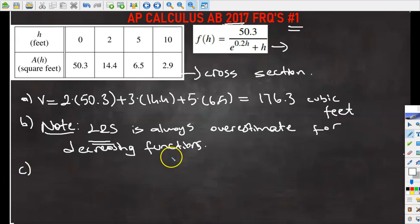So let's move on to part C. In part C it says the area in square feet of the horizontal cross section at height h feet is modeled by this function: f of h is equal to 50.3 divided by e to the power of 0.2h plus h. So based on this model find the volume of the tank.